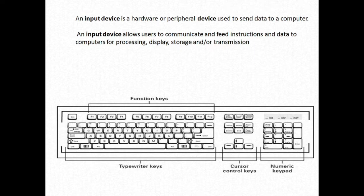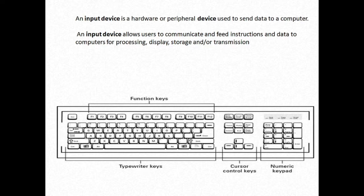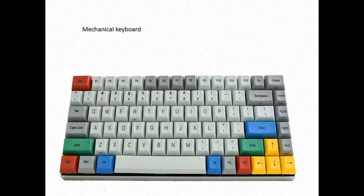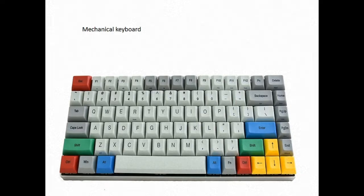It constitutes basically four types of keys: alphabetical keys, numeric keys, function keys, and special keys. Apart from these, it did not have any extra keys. You will not find any volume button, Wi-Fi button, or special Windows key. So this is the traditional mechanical keyboard.